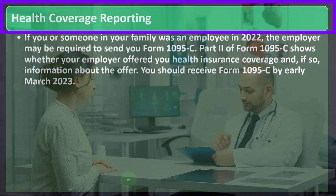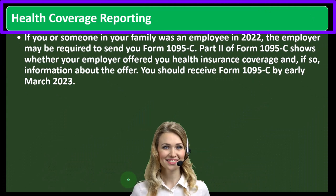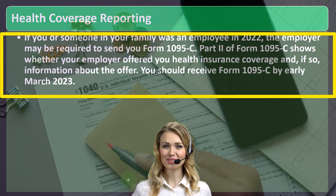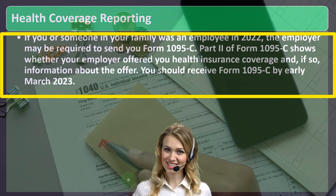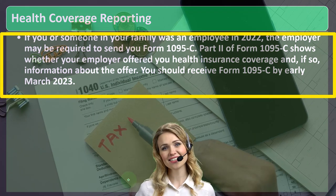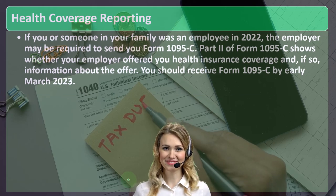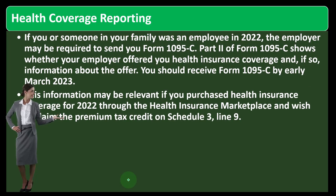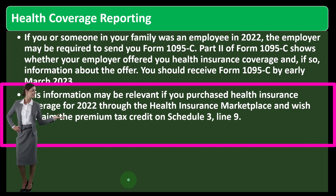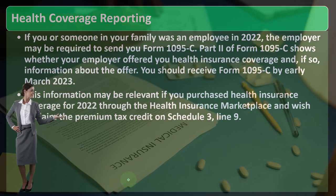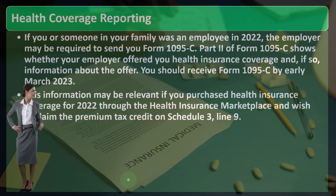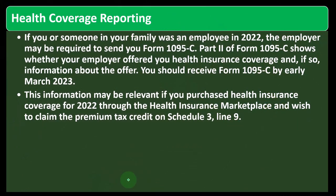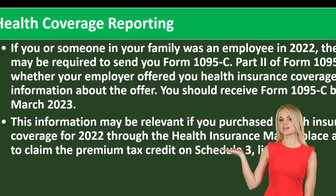Health coverage reporting: if you or someone in your family was an employee in 2022, the employer may be required to send you Form 1095-C. Part two of Form 1095-C shows whether your employer offered you health insurance coverage and, if so, information about the offer. You should receive Form 1095-C by early March 2023. This information may be relevant if you purchase health insurance coverage through the health insurance marketplace and wish to claim the premium tax credit on Schedule 3, line 9.